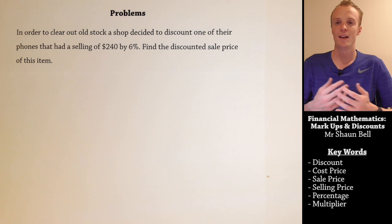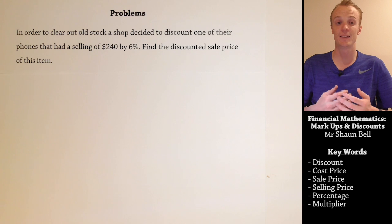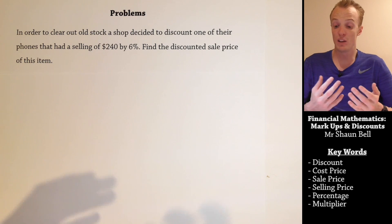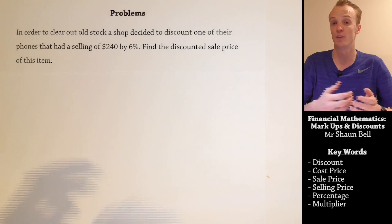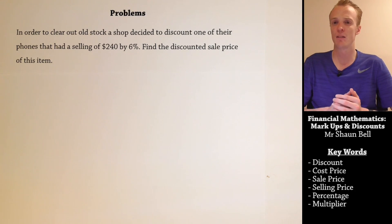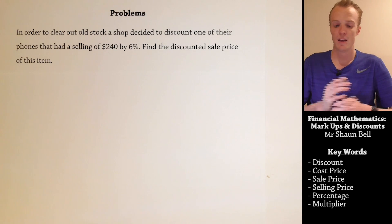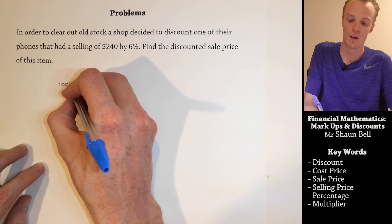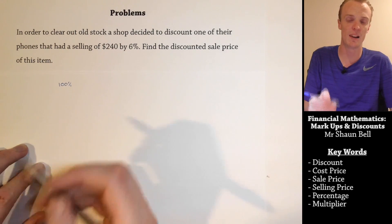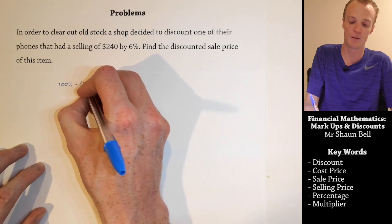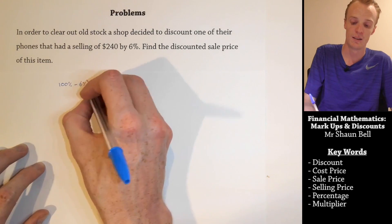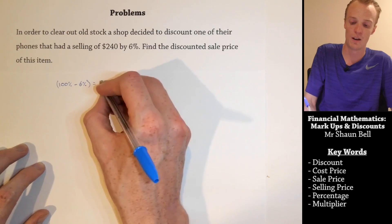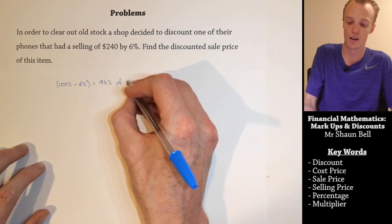When we're applying a discount, essentially we're decreasing the price by the percentage of the discount — in this case, 6%. To find the discounted price, we could first work out what 6% of $240 is, then subtract that amount from the $240. However, like markups, there is a quicker method. If we consider $240 to be our 100% value, we're essentially looking for 6% less of that value, so we're subtracting 6%. This means that we're looking for 94% of $240, and that will find our discounted sale price.